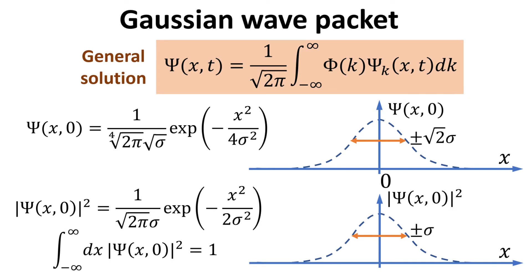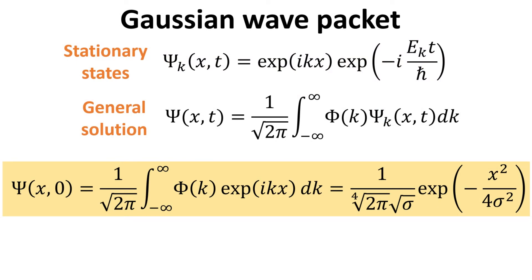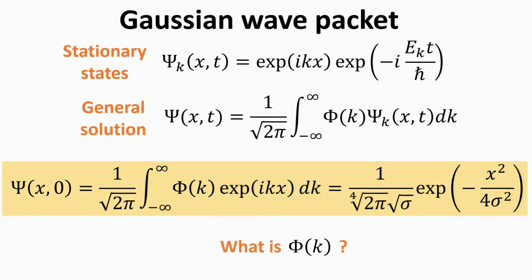The modulus square of the Gaussian wave function also yields a Gaussian function. The form of the Gaussian wave function is chosen such that its modulus square, or its probability density, is normalized and has a standard deviation given by sigma. So we require our general solution psi to have a specific form at time t equals zero, as shown in the yellow box. At t equals zero, the time harmonics term in the integral drops off.